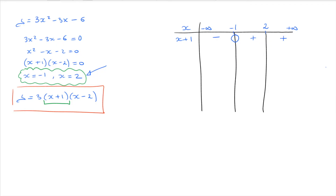We're done with that factor, so we draw a line and focus on the next factor, x minus 2. We write x minus 2 in the table and study its sign. x minus 2 equals zero when x equals 2. For all x values less than 2, it's negative, so we add a negative symbol in both columns to the left of 2. For x values greater than 2, it is positive.